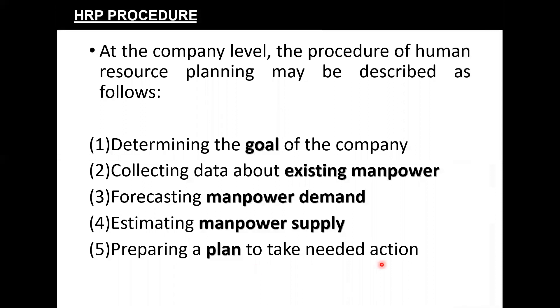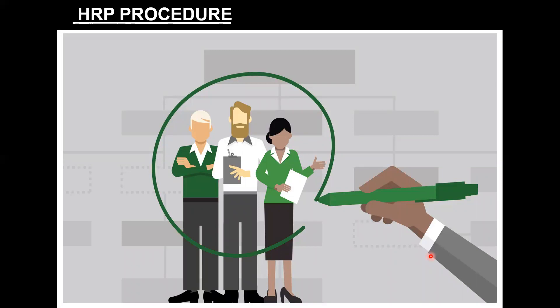Have a quick look at all five steps discussed in detail today: determining goals, collecting existing manpower data, forecasting manpower demand, estimating manpower supply, and taking an action plan to maintain balance. This was all for today. For any doubts, feel free to post them in Google Classroom and they will be answered at the earliest. See you soon in the next lecture where we will finish the chapter by understanding the advantages and limitations of human resource planning. Thank you and happy learning.